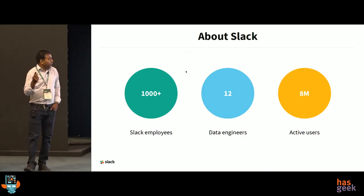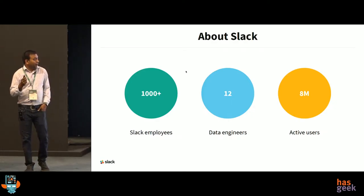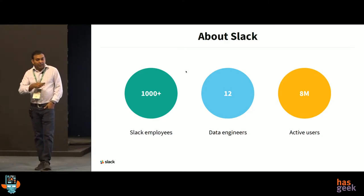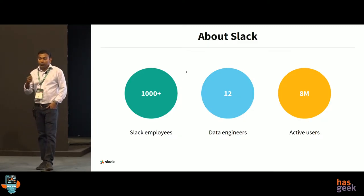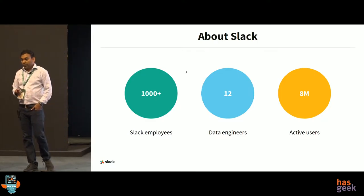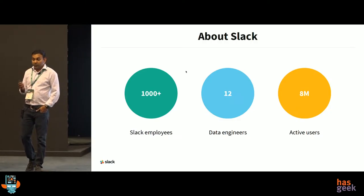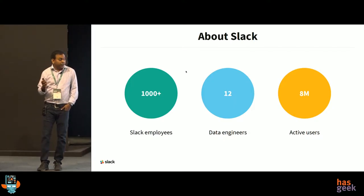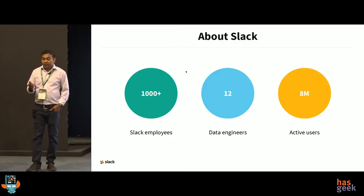To give a sense of scale, we have more than 1,000 Slack employees across seven countries, but only 12 data engineers. I give those numbers for a reason — if you go through the talk you'll find out why there are only 12 and how we optimize our system to scale. Right now we have around 8 million active users, always connected. On average, a user is connected 10 hours to the system, which adds complexity to logging instrumentation and scaling the infrastructure.